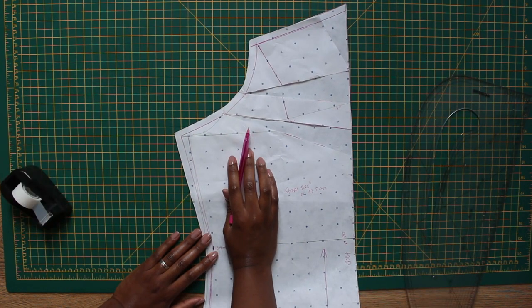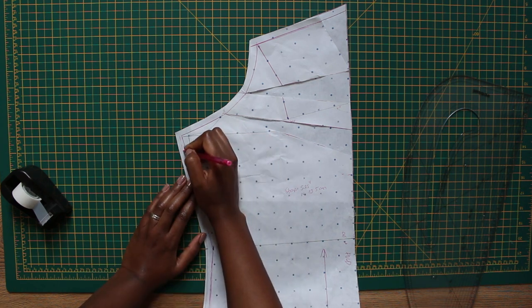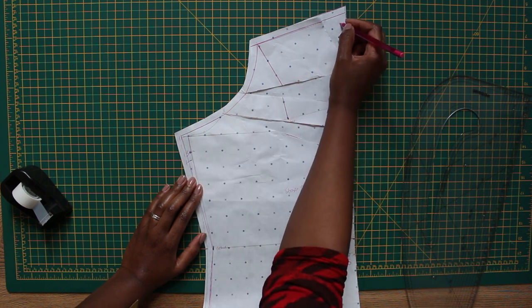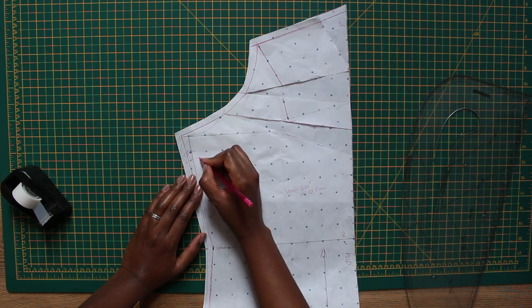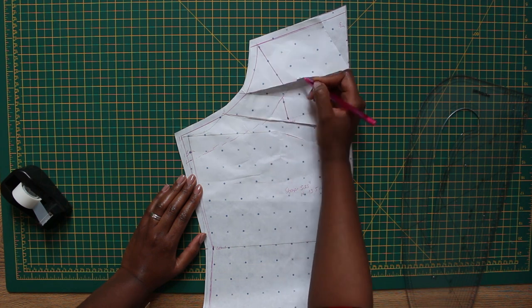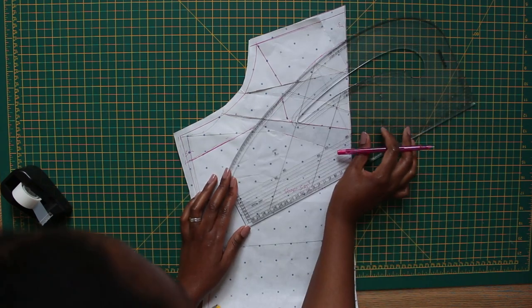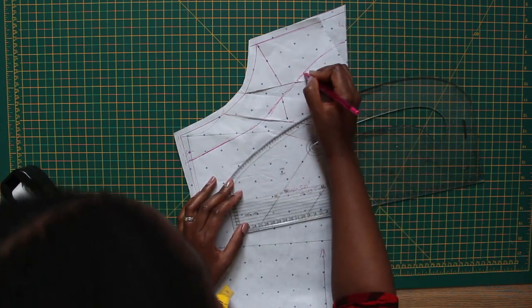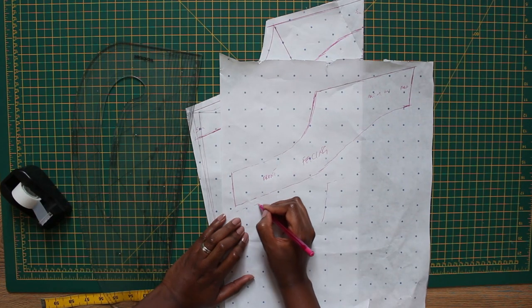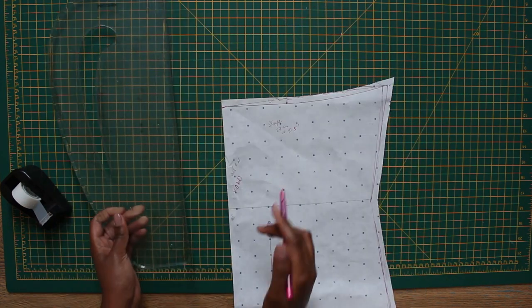Now I want to create a facing for the front part. So I marked five centimeters down, also here five centimeters, and I'm just gonna freehand. For the back I'm gonna do the same.